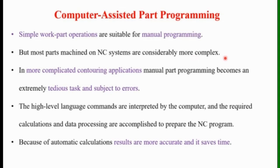Therefore, in case of more complex jobs or work parts, we have to go for Computer Assisted Part Programming. Computer Assisted Part Programming is necessary for more complex jobs. High-level language commands are interpreted by computers. In Computer Assisted Part Programming, high-level language commands are interpreted and the required calculations and data processing are accomplished to prepare the NC program. Because of automatic calculations, the results are more accurate and it saves the time required to calculate manually.